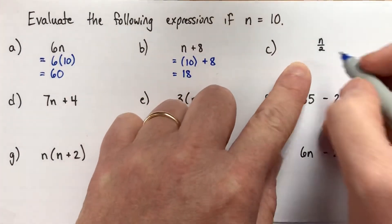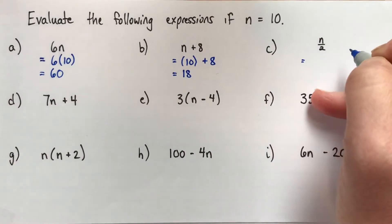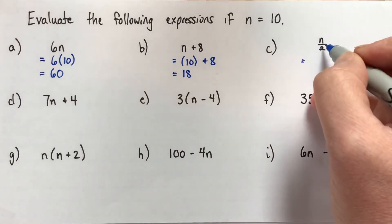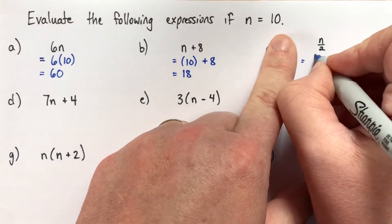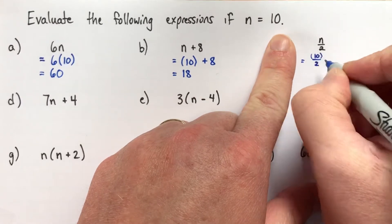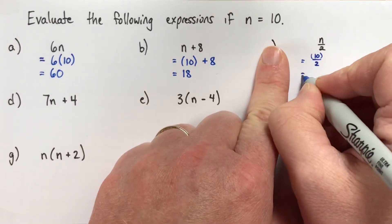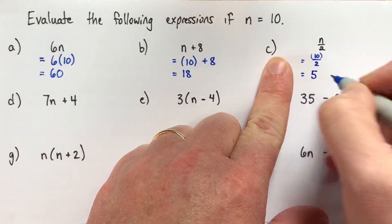Alright, next one. Here it's n halves, you might think when you look at that. This is also a division sign, so it's the same as n divided by 2. In fact, I would read that as n divided by 2. So it's 10 divided by 2. You can put the brackets, 10 in brackets, but this is another example where they're not very important. 10 divided by 2 is 5.